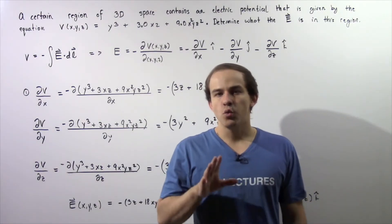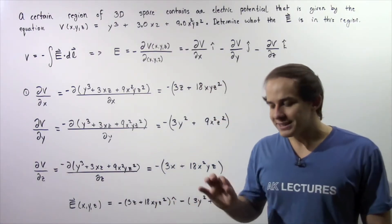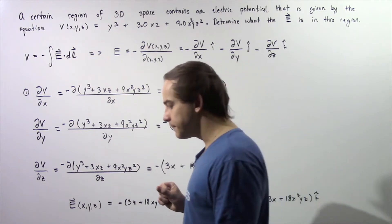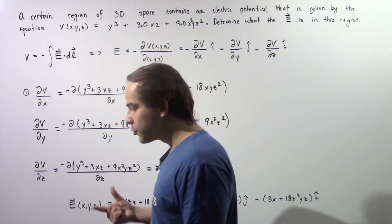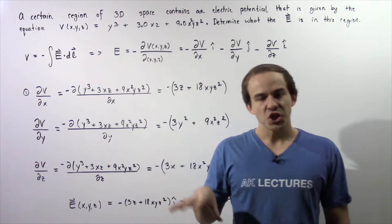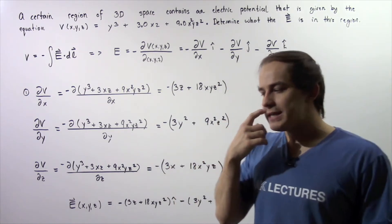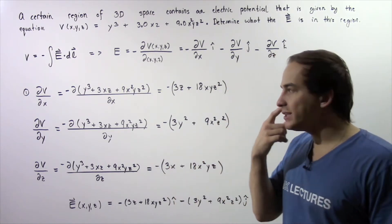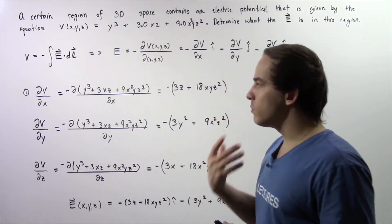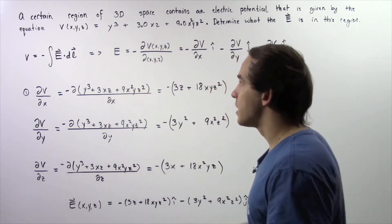In the previous lecture, we were able to show that the electric field depends on the voltage difference. In other words, if we know what the voltage difference is in a certain region of space, we can calculate what the electric field is. So we're going to apply that result in this example.